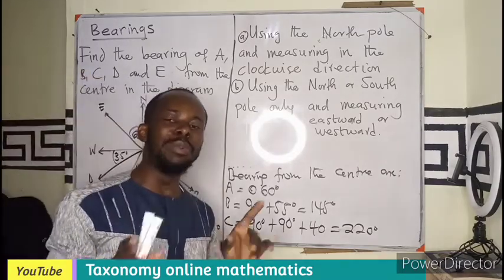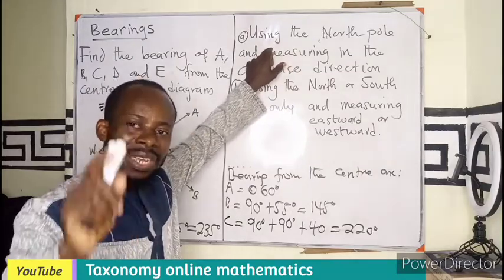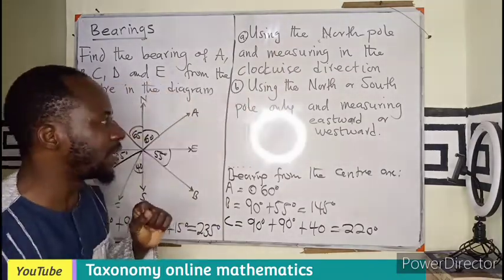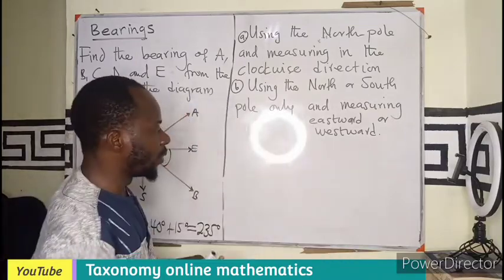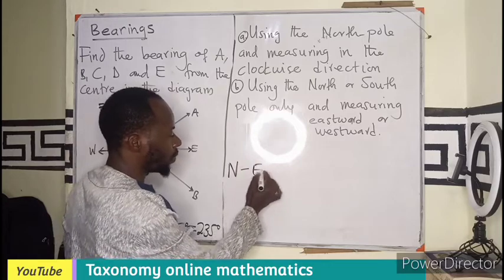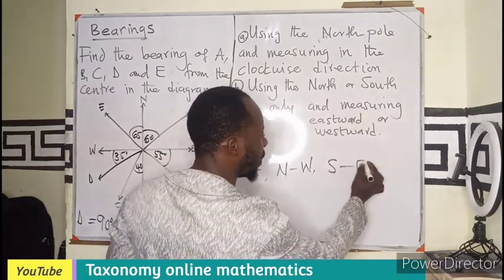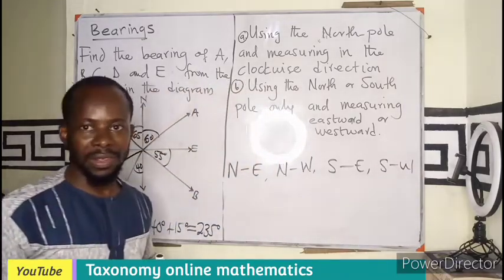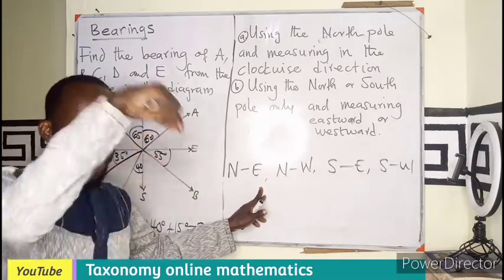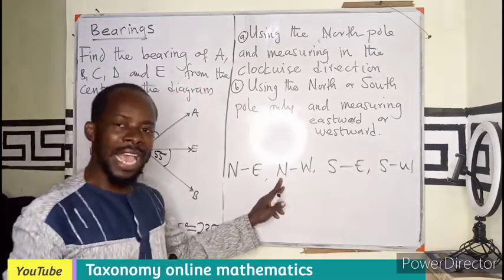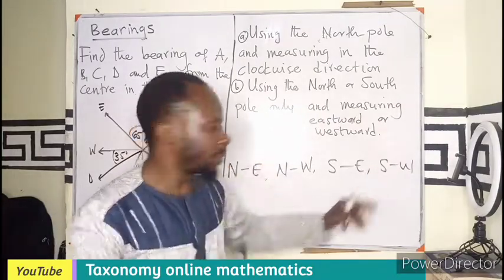The bearing in this method is not measured taking clockwise direction only. It is only in the first measurement that clockwise direction is used. In the second method, both north and south are used. Our measurement is going to be either northeast, or northwest, or southeast, or southwest. The measurement starts from the north towards the east, or north towards the west, or south towards the east, or south towards the west.